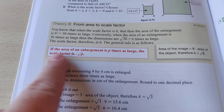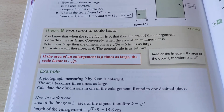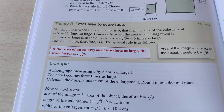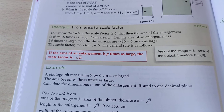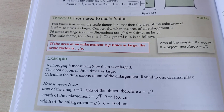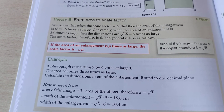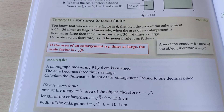In red it says — the red things are always the things that you actually know — if the area of an enlargement is P times as large, the scale factor is the square root of P. And then here they use an example, but they don't really use a picture in this example, so that's why I don't really like it.